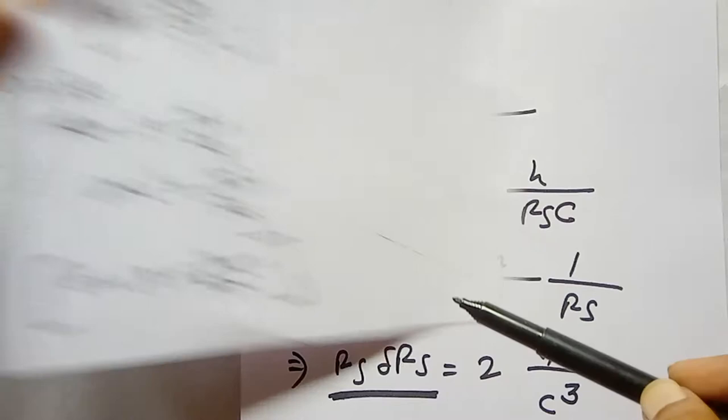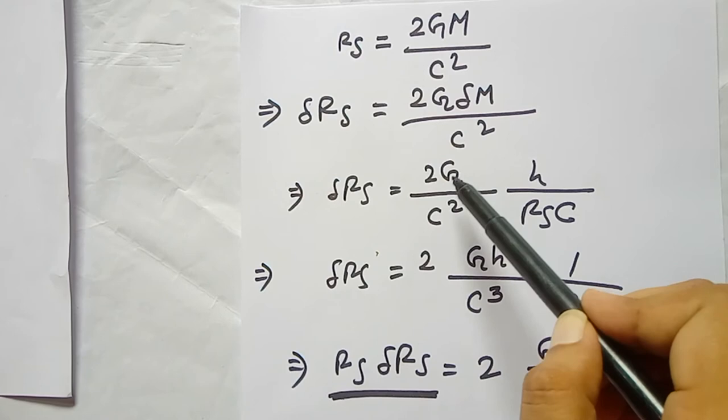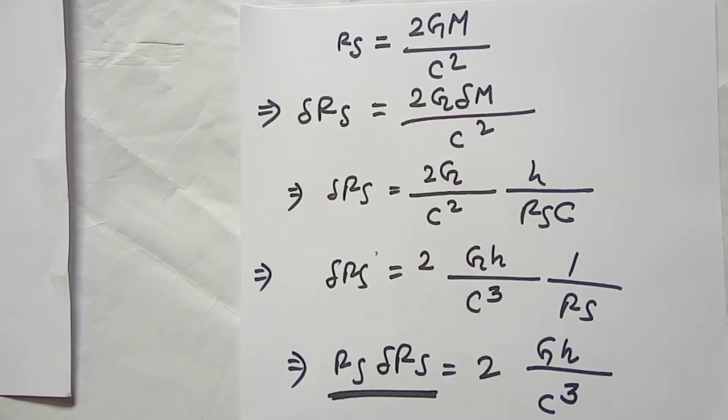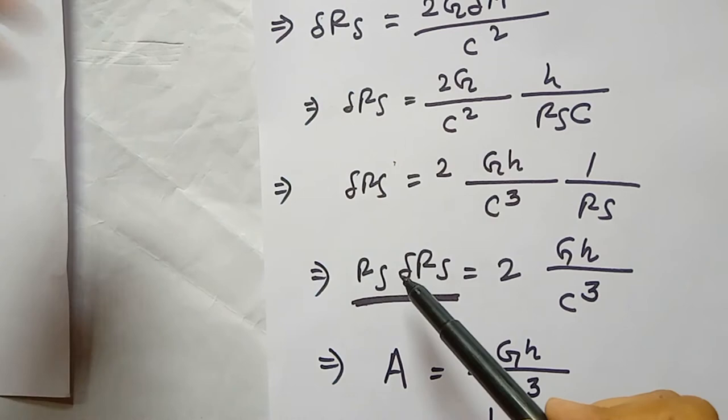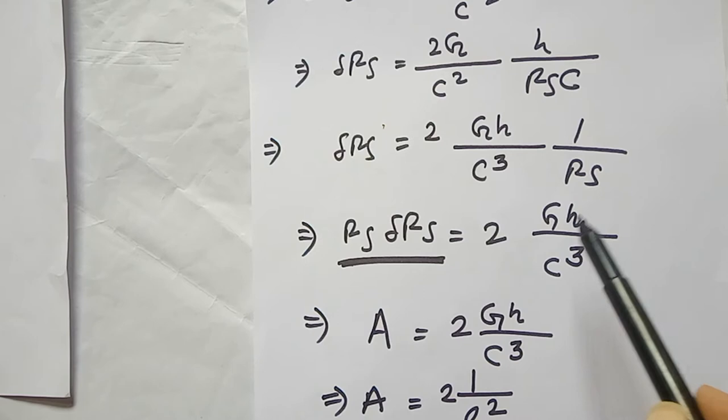Substituting, we get delta rs equals 2Gh divided by (c squared times rs times c), which simplifies to delta rs equals 2Gh divided by (c cubed times rs). Multiplying both sides by rs, we get rs times delta rs equals 2Gh divided by c cubed.